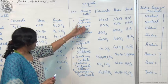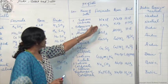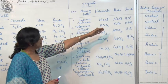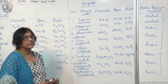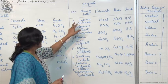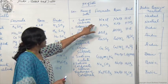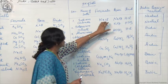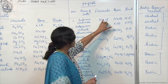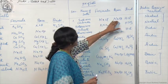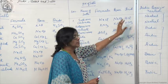Then make the table — write the formula, and also write from which base and acid each salt has been formed. Like sodium chloride, NaCl, which is common salt — it is formed from NaOH and HCl.